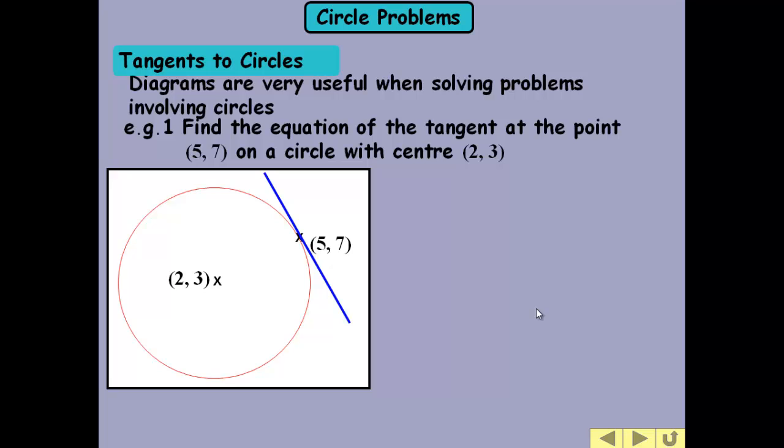So the tangent will look like that. And that instantly gives us quite a lot of information. We can see the gradient's negative. Because as we move in a positive x direction, the line's going down. The y value is getting smaller.